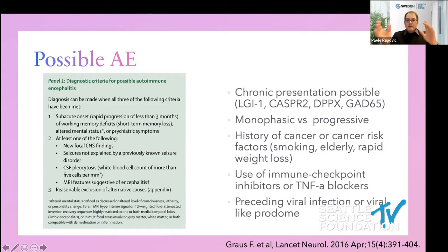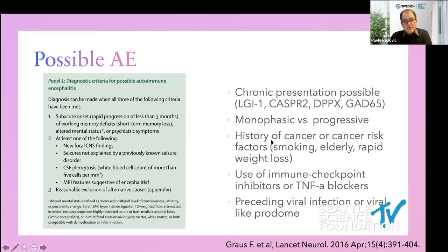The three-month window is recommended, but chronic presentation is possible with some of these. Monophasic course is common, but occasionally it can be progressive or relapsing. History of cancer or cancer risk — such as elderly age, smoking history, or rapid weight loss — should raise the possibility. Use of immune checkpoint inhibitors, TNF-alpha blockers, and preceding viral infection are all background information worth recalling.